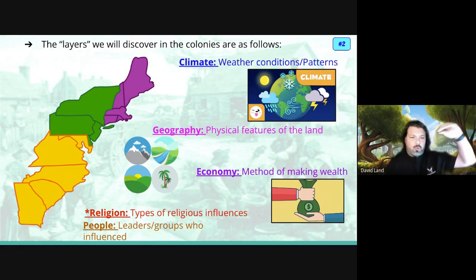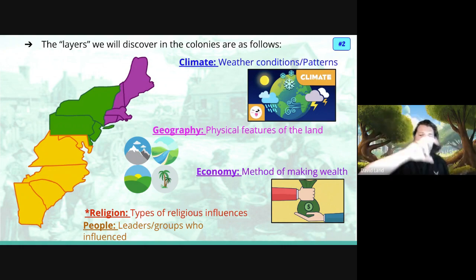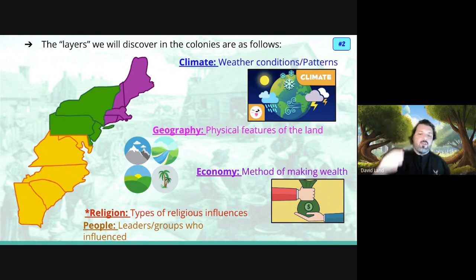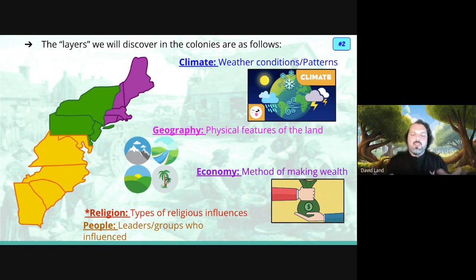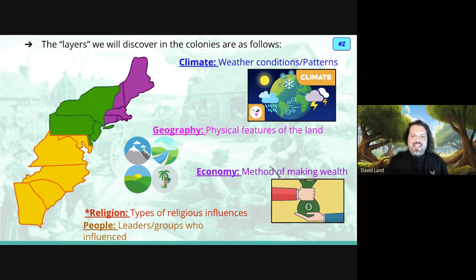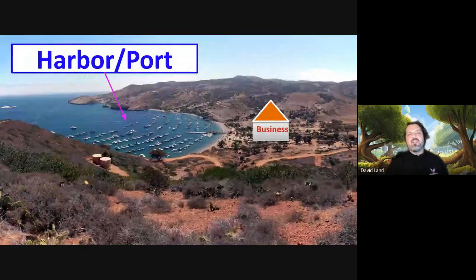Notice on the colonies map there are three divisions — top, bottom, and middle. I'm going to call them the three regions, the three big areas of the 13 colonies. Yes, there are 13 future states of America, but right now we call them colonies because they're not completely settled or fully developed. On the map, I can see three regions.